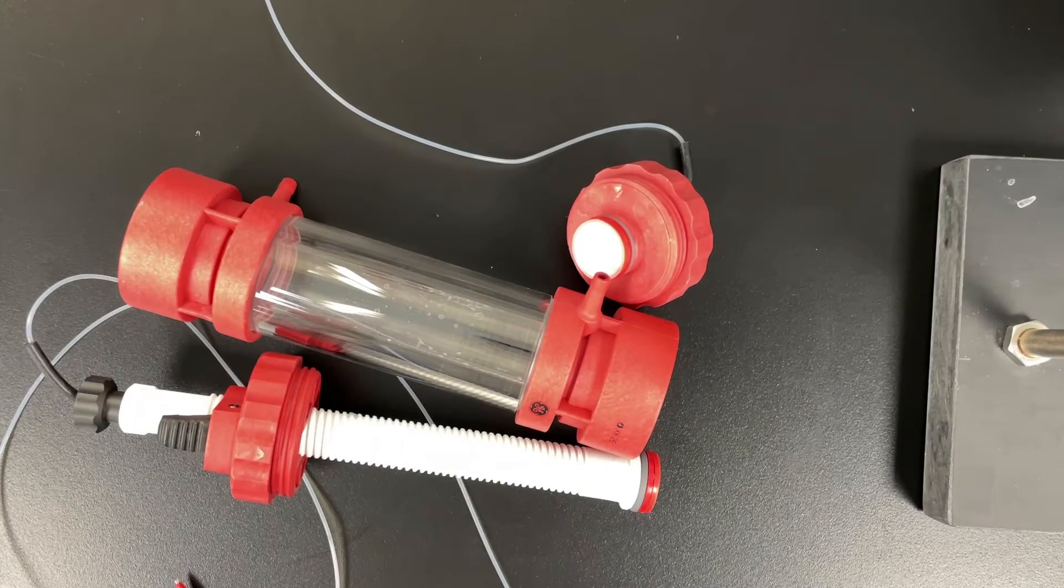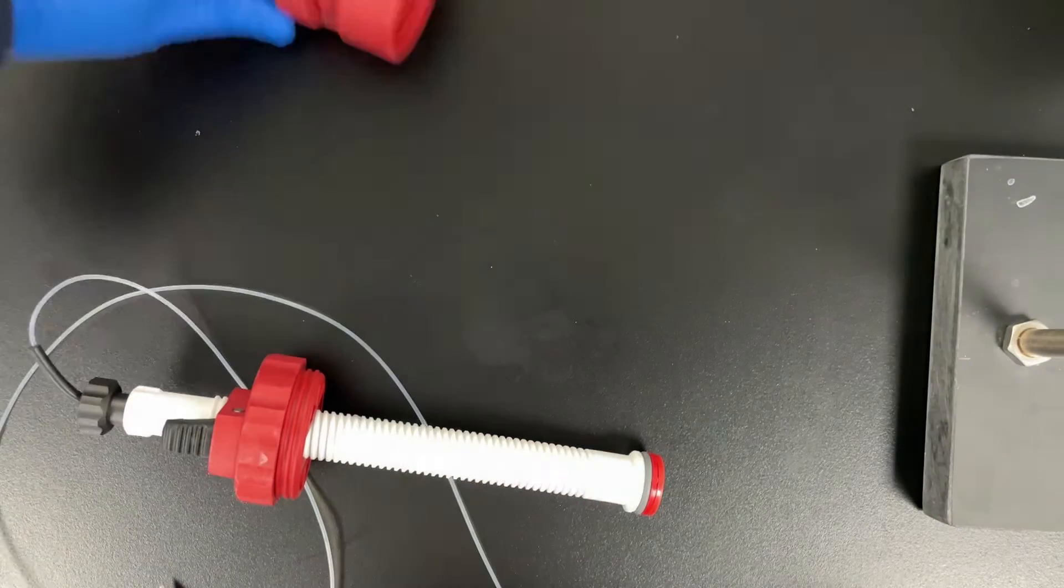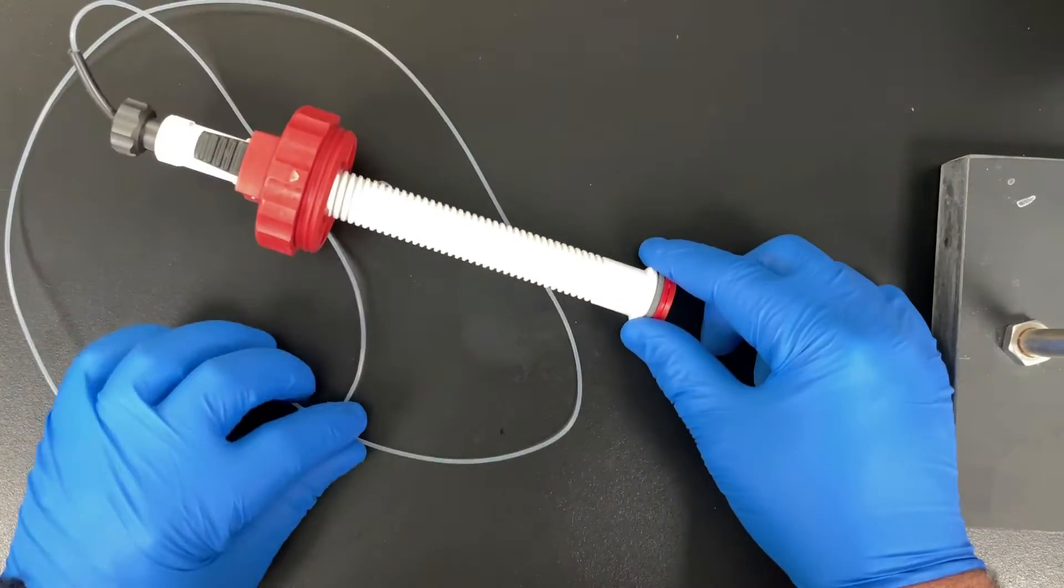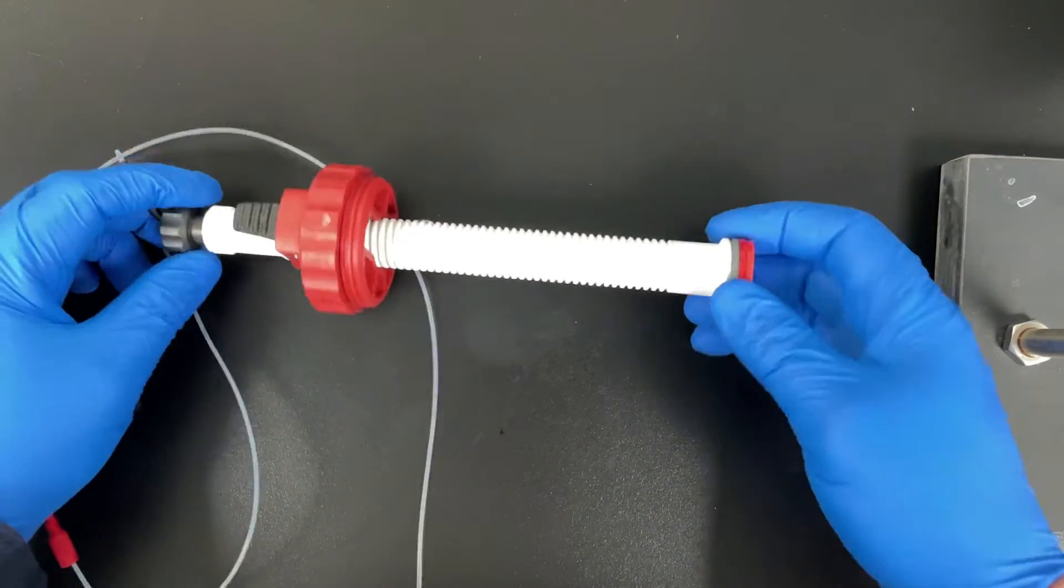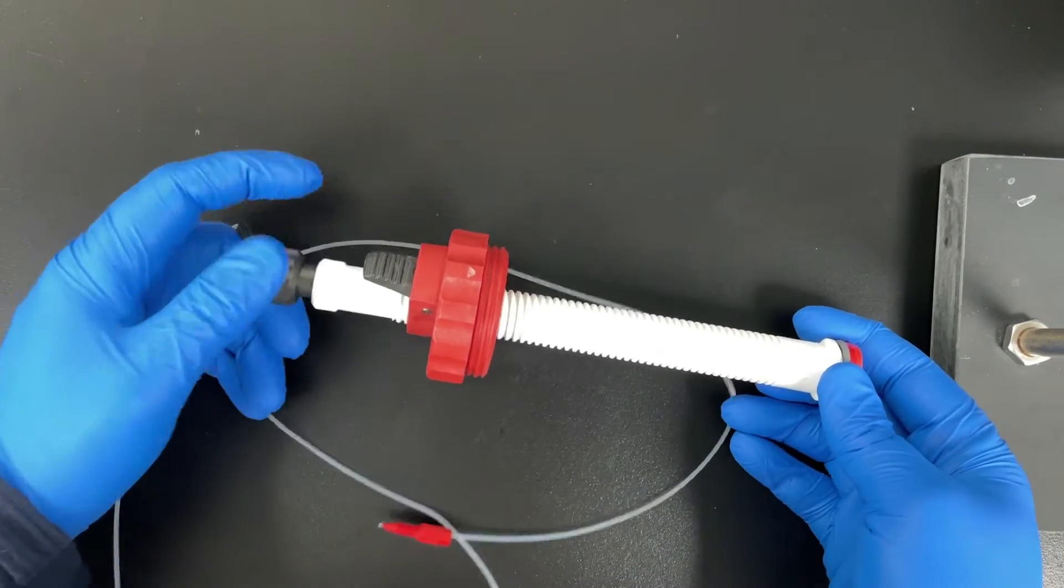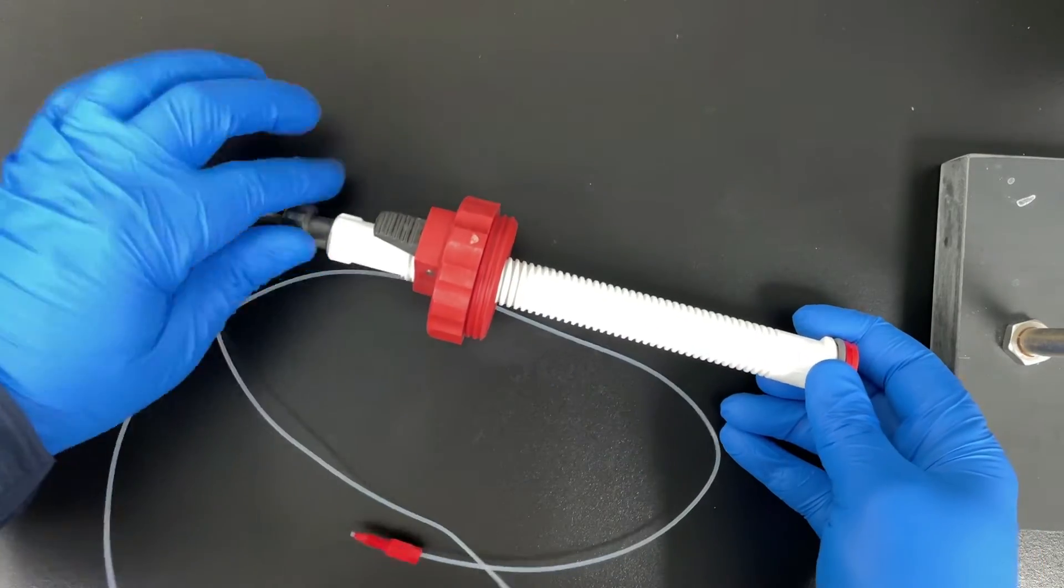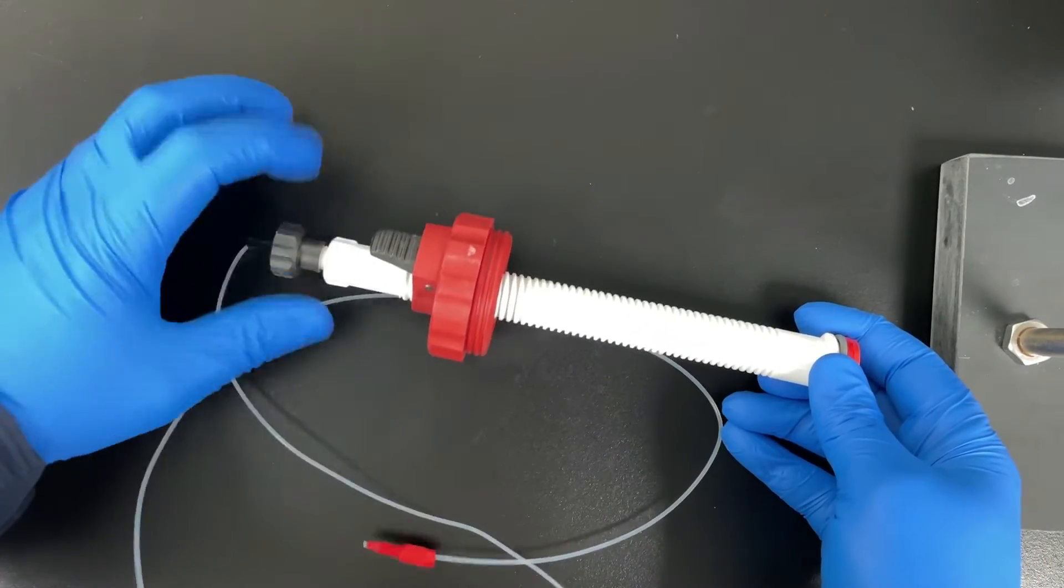I'm going to use this XK26 column for the pack. The first thing we're going to do is check the top adapter to make sure there's no obvious damage to it. Then we're going to start unscrewing this black knob on the top. We're going to take it all the way off.